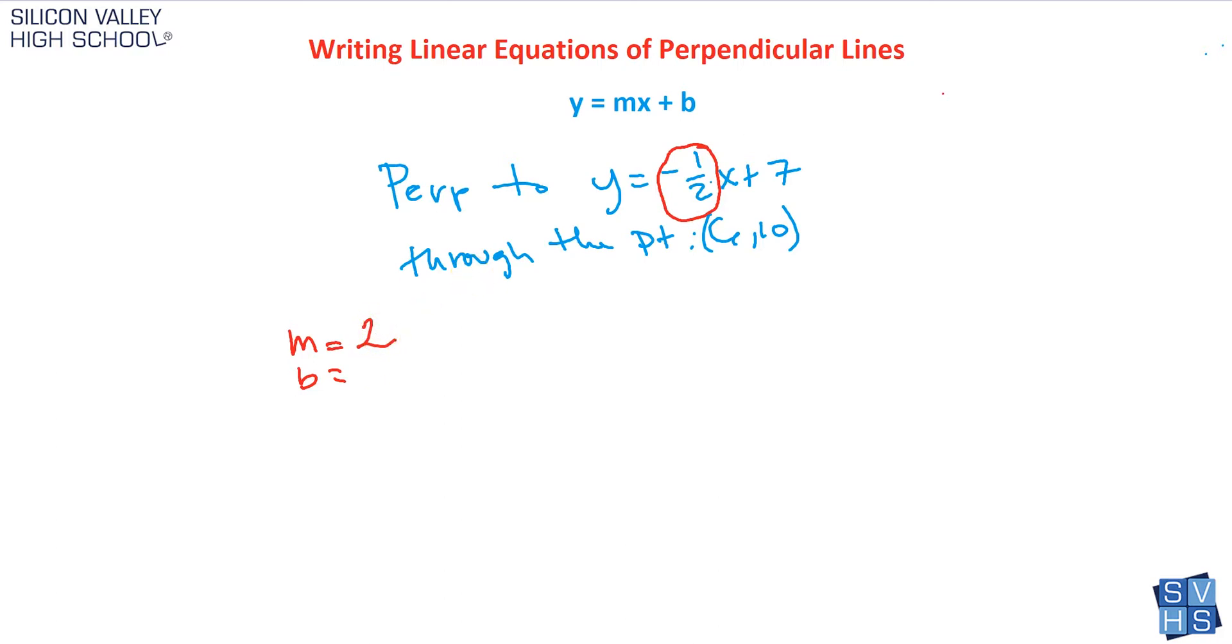Now, if I actually went and plugged that back into y equals mx plus b, I have y equals two x plus b. My m was two, it goes in here. So now, what about my b? Here I have three variables, too many. I can't, I have no idea what to do.